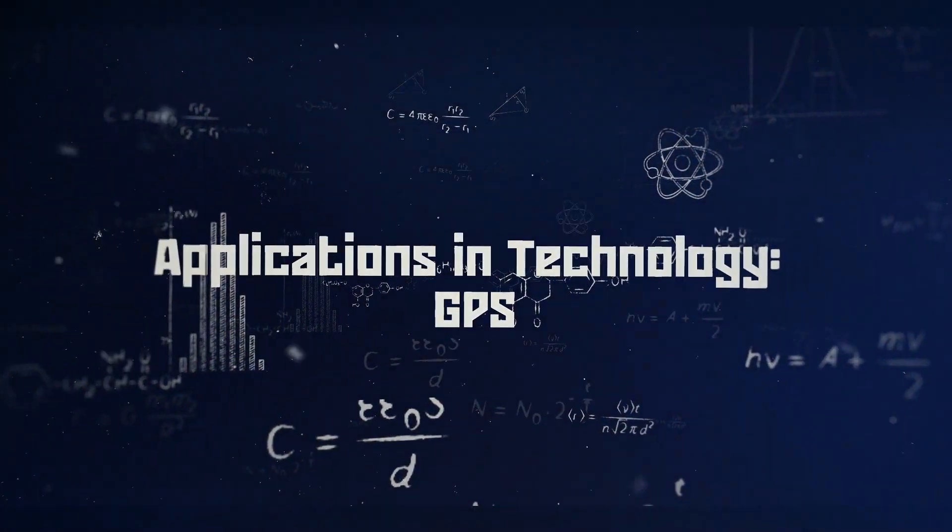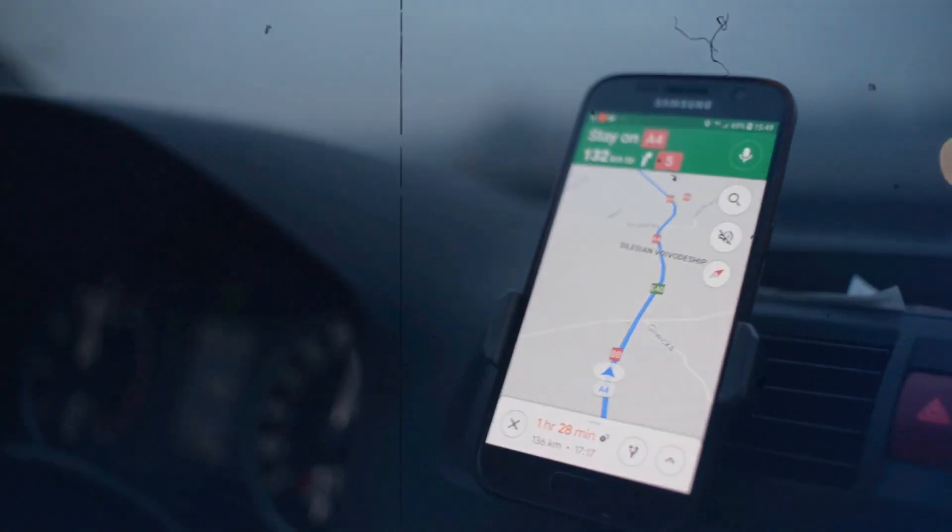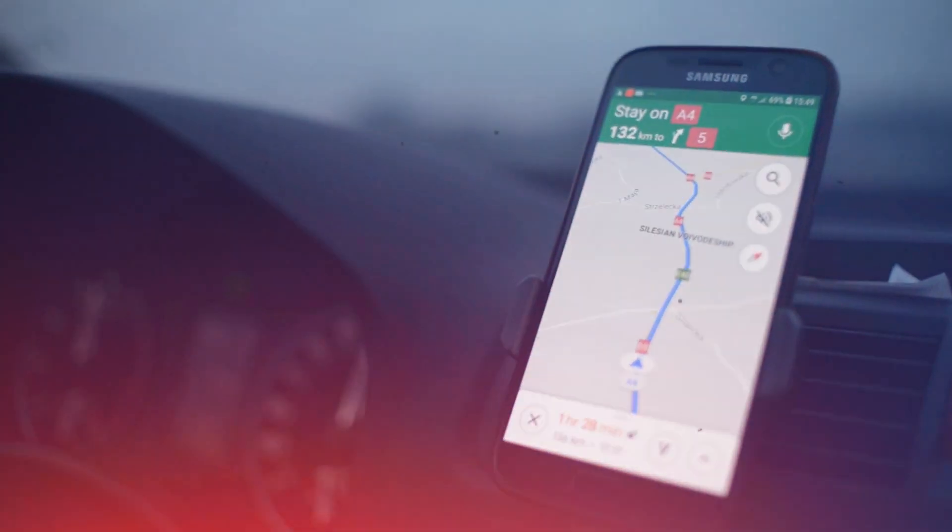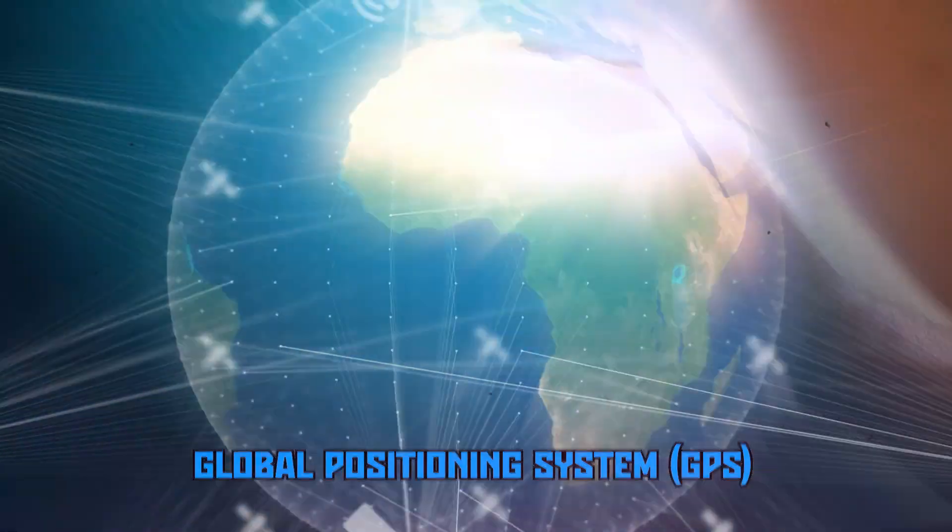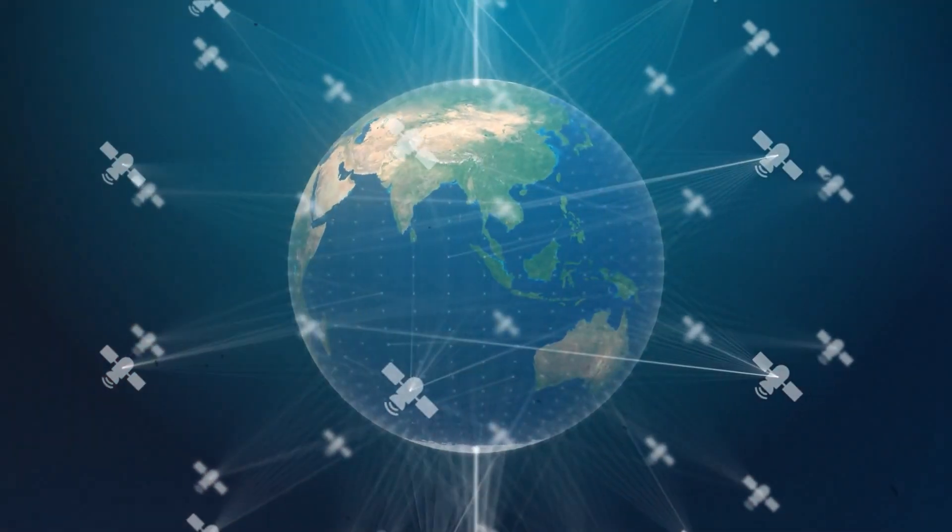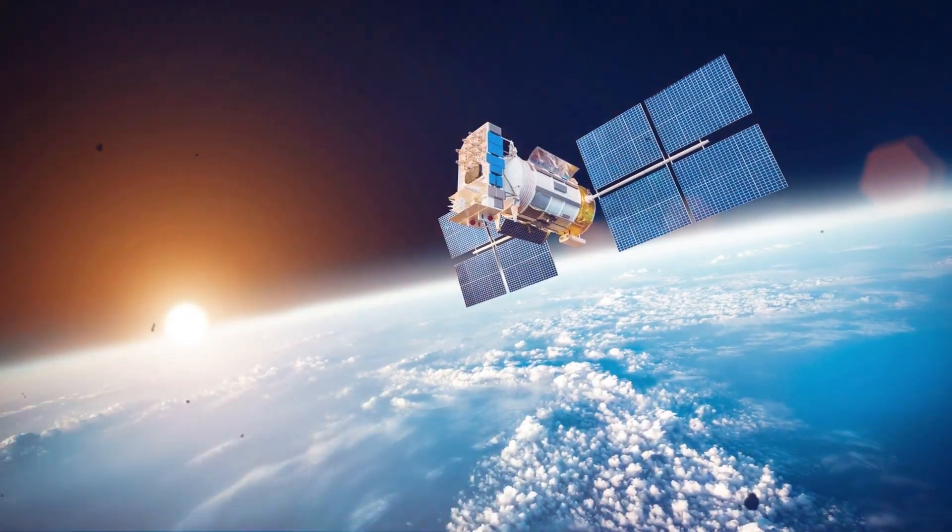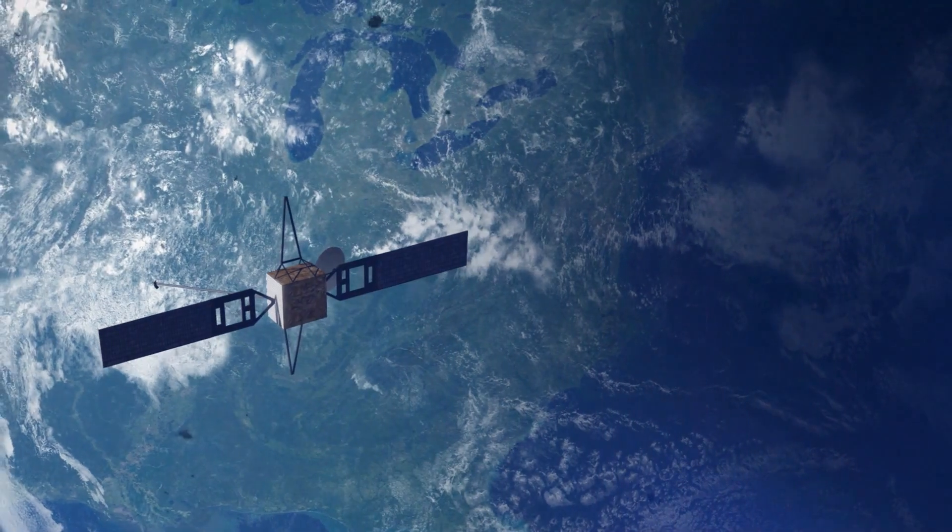Applications and technology. Now, let's talk about applications. One practical use of gravitational time dilation is in the Global Positioning System, GPS. GPS satellites orbit high above the Earth, where the gravity is weaker. This weaker gravity causes time to move faster for the satellites compared to time on the ground.